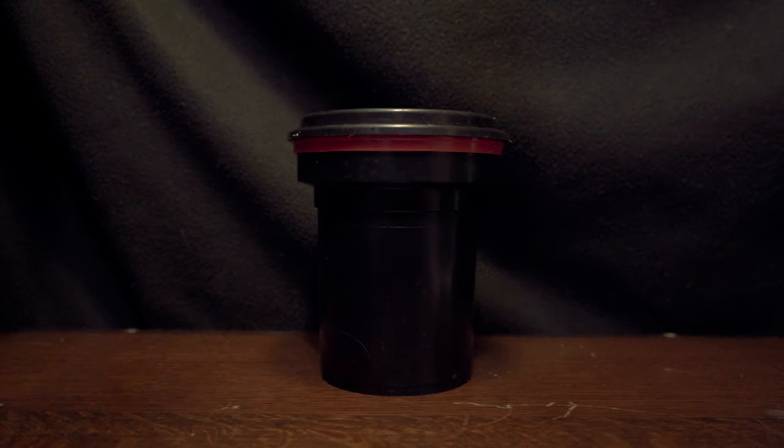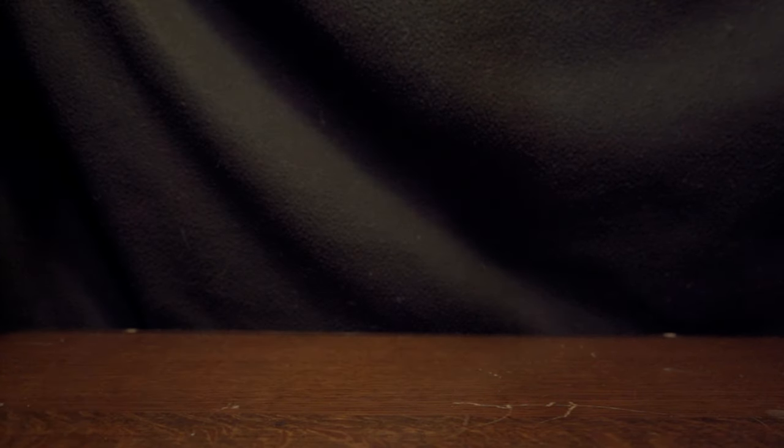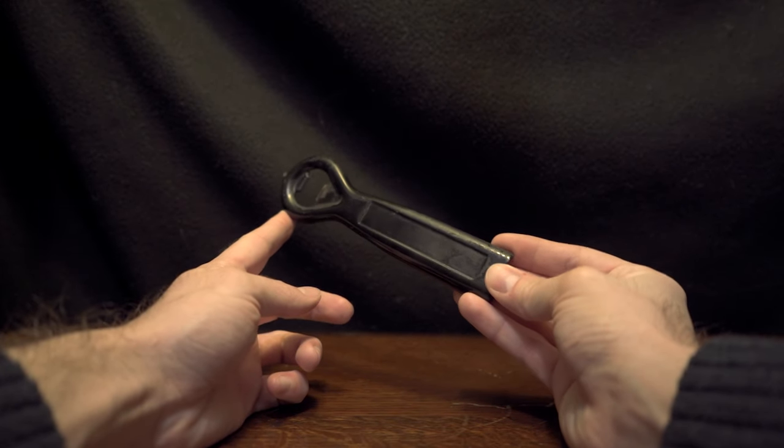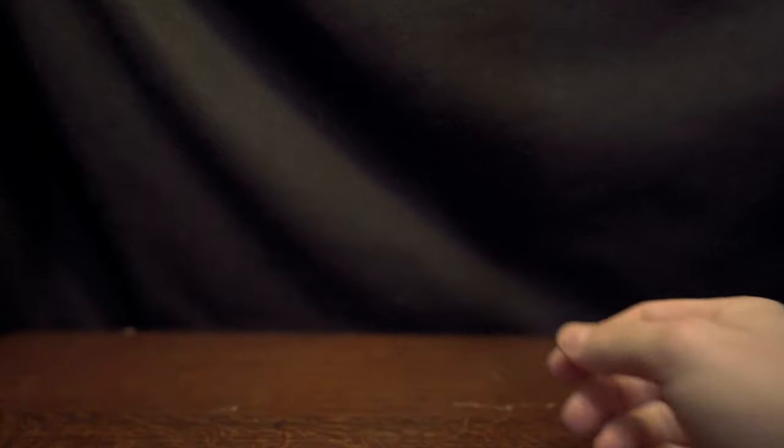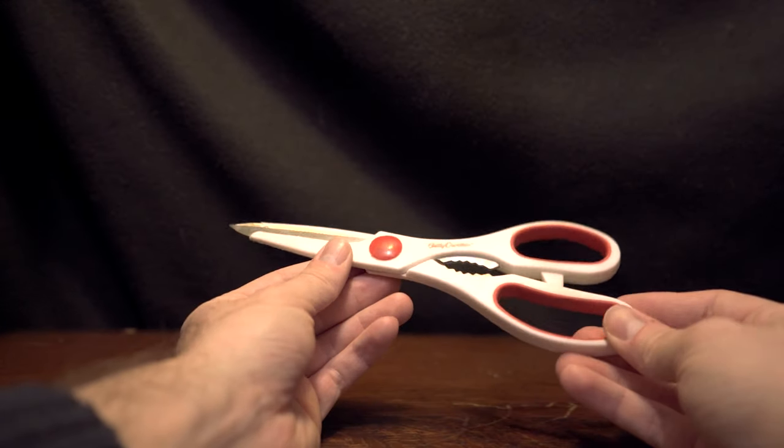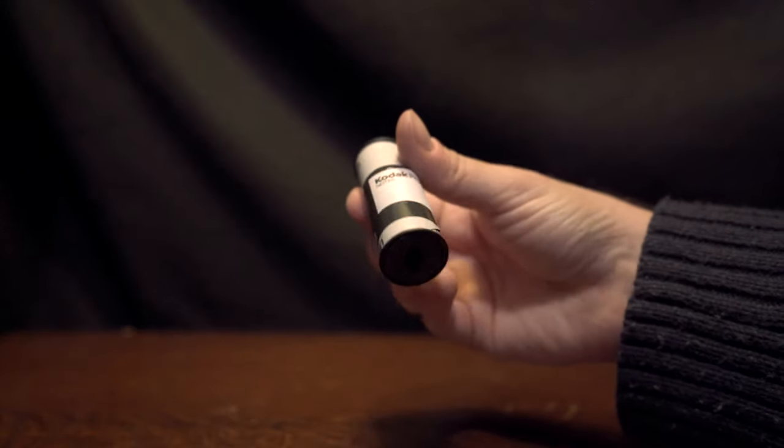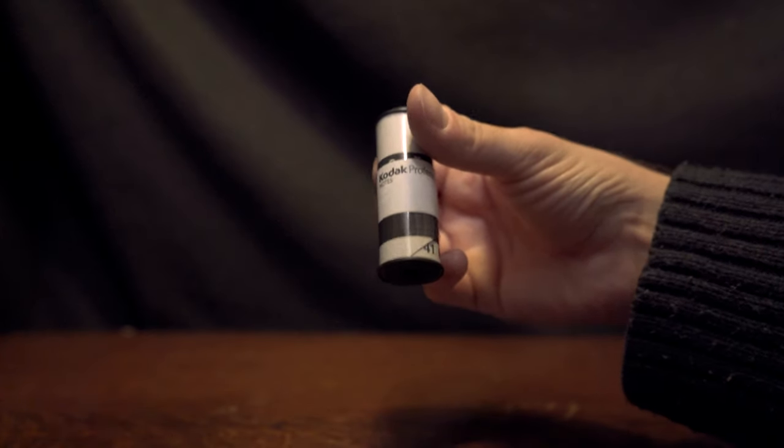Okay, so here's what you'll need. You'll need a Patterson tank to pour chemicals in and keep light out. If you're developing 35 millimeter you can use a bottle opener to open the film canister. You'll also need scissors for 35 millimeter to cut off the spool at the end of the roll. Most importantly you'll need some film to develop. Today I'm using a roll of Portra 400 in 120.